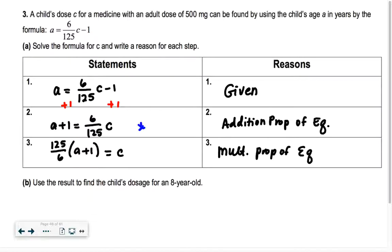So if you need to write yourself a note, we're going to multiply by 125 over 6. And then if it really bothers you that the C is on the right, you could do your symmetric property of equality. I don't care. You can just leave it there. It's fine.